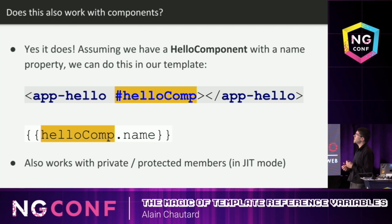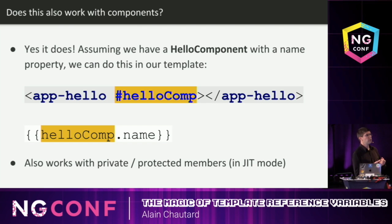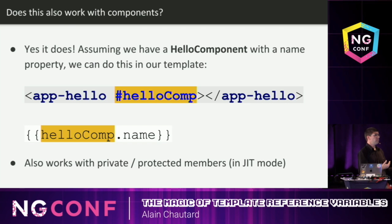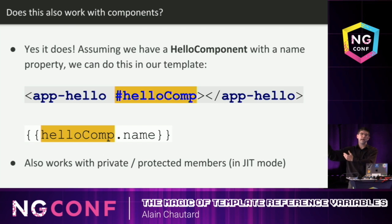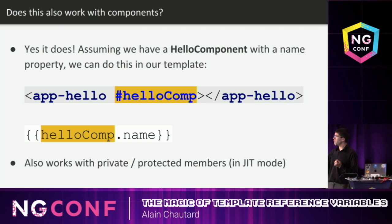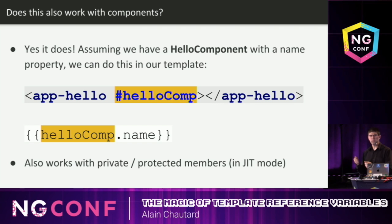Now when we apply this hashtag syntax on a component, what we get instead of a reference to the HTML element is a reference to the actual component instance, which means I can access any property or method of that component outside of the template of that component. This could be helpful if, let's say, this component was a pop-up window — I could have a button that would just trigger the pop-up to show up outside of that template. Surprisingly enough, this also works with private or protected members in JIT mode. In AOT, you would get some issues with that.